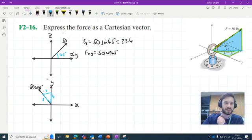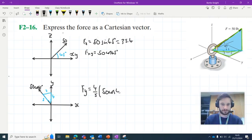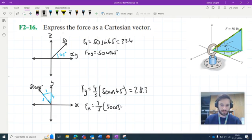Okay, from this diagram, then, we can say our y component takes a value of 4 fifths of 50 cos 45. Which, again, when we bung in our calculator, gives us a value of 28.3.